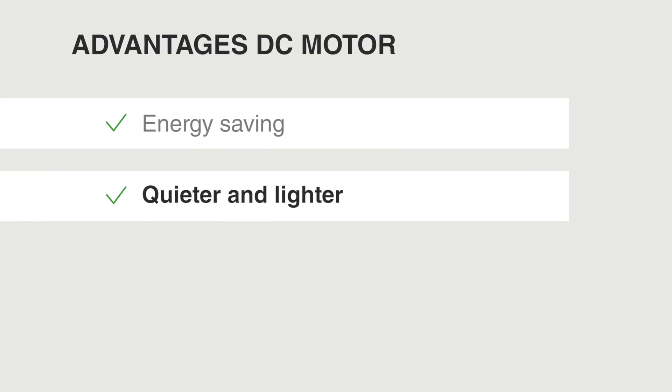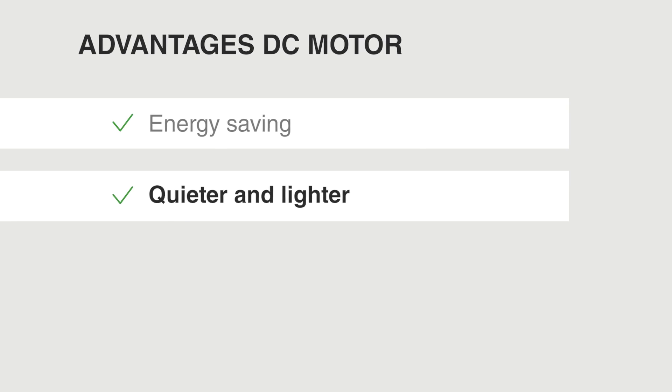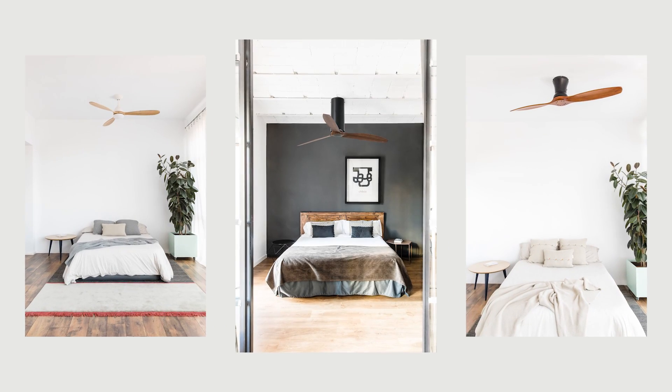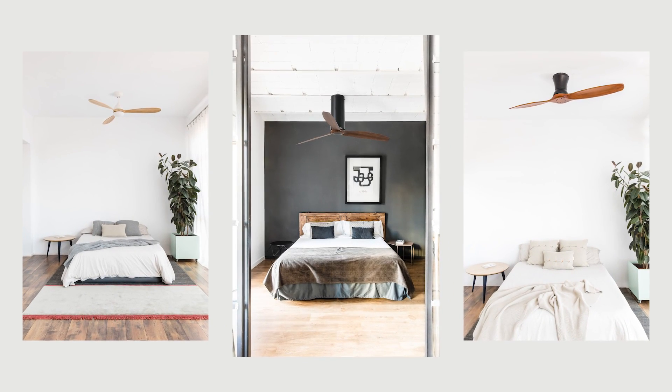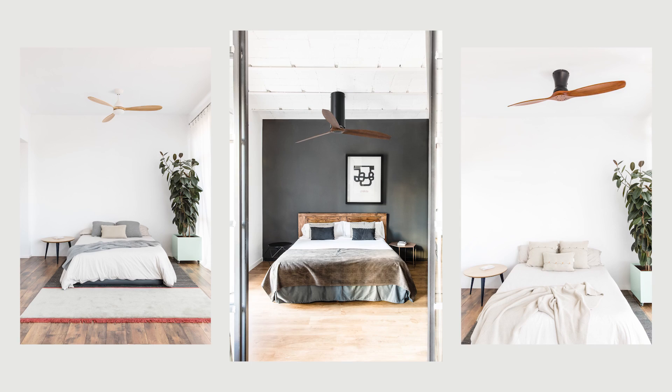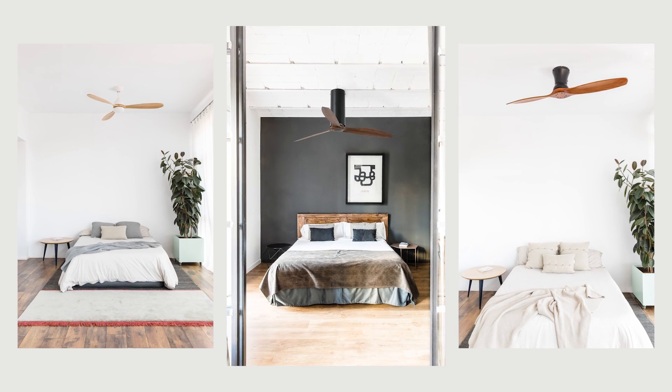Quieter and lighter. Ceiling fans with DC motors are much quieter. They require less friction from the motor, which is why they're more recommended for rooms such as bedrooms. They're also easier to install as they weigh much less.